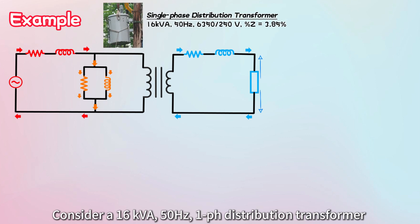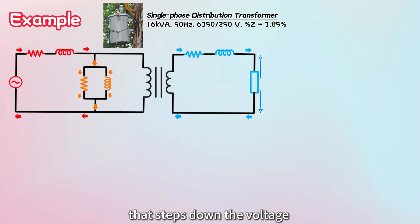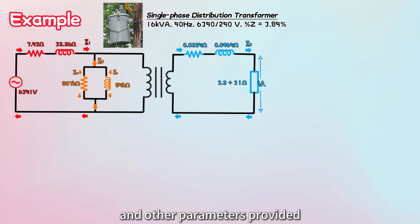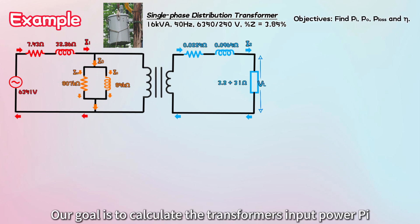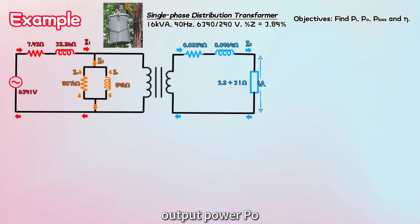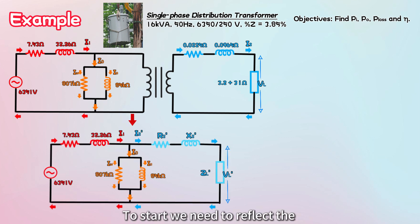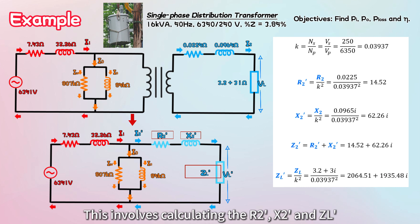Let's try a sample calculation to better understand the transformer equivalent circuit. Consider a 16 kVA, 50 Hz, single-phase distribution transformer that steps down the voltage from 6350 volts to 250 volts, with percentage impedance of 3.85% and other parameters provided. Our goal is to calculate the transformer's input power, output power, power loss, and efficiency. To start, we need to reflect the secondary circuit components to the primary circuit, calculating R2', X2', and ZL'.